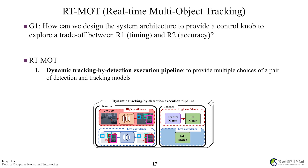Focusing on G1 — how to design the system architecture to provide a control knob — we propose a dynamic tracking-by-detection execution pipeline to provide multiple choices of a pair of detection and tracking models. You can choose either high confidence or low confidence detection, and high confidence or low confidence tracking. The logic is simple, though implementation is not.